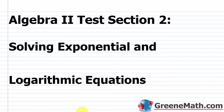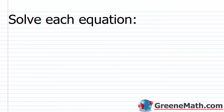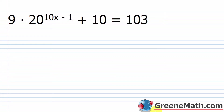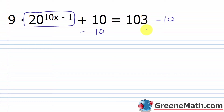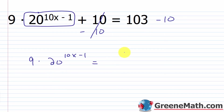Hello and welcome to Algebra 2 Test Section 2 on solving exponential and logarithmic equations. We want to solve each equation. We have 9 times 20 raised to the power of 10x minus 1, plus 10, equals 103. The first thing I want to do is get the exponential part by itself, so I subtract 10 from each side. That cancels, and I end up with 9 multiplied by 20 raised to the power of 10x minus 1 equals 93.